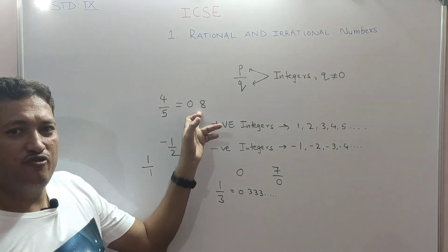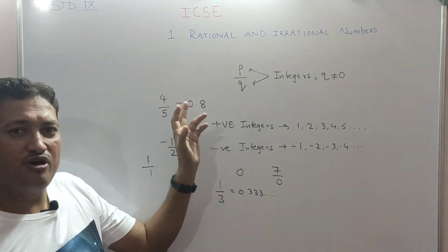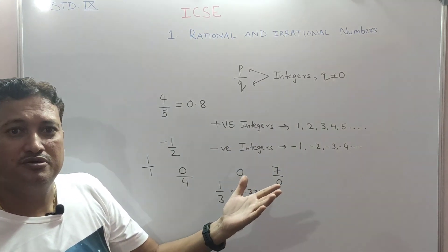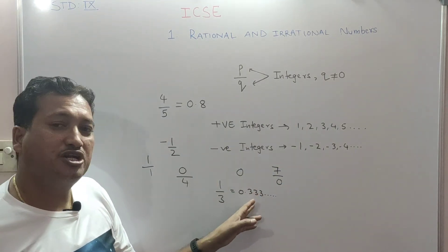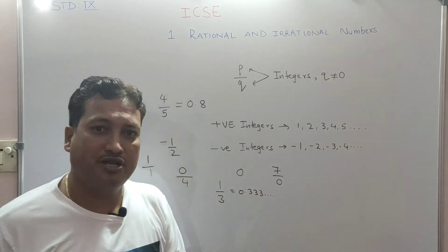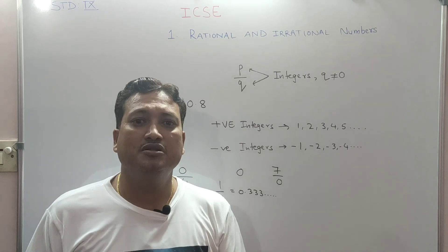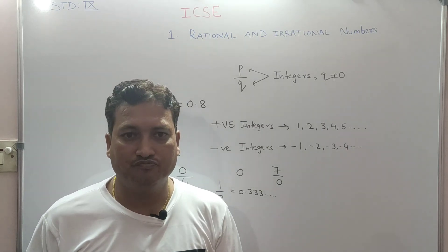Therefore, if the decimal form is terminating, it is a rational number. If it is non-terminating but recurring, then it is also a rational number.